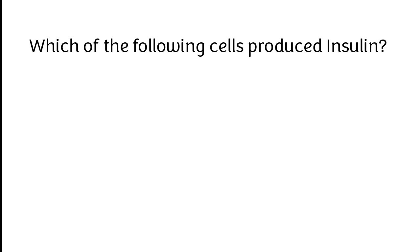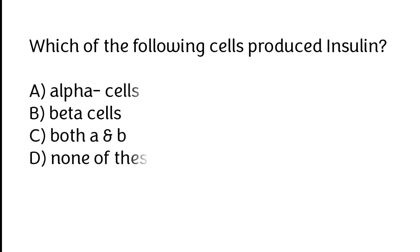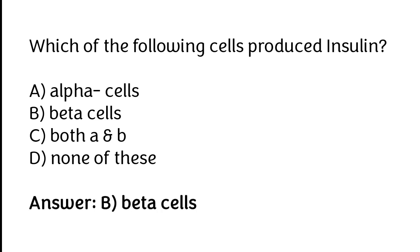Which of the following cells produce insulin? Alpha cells, Beta cells, both A and B, none of these. The correct answer is Option B. Beta cells produce insulin.